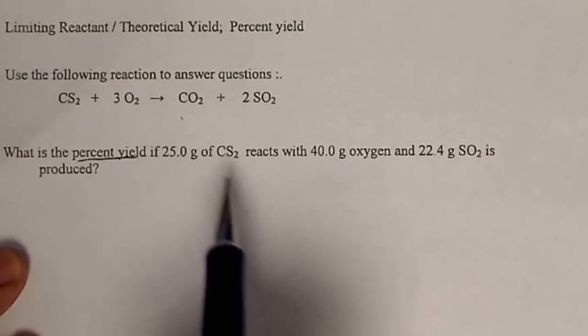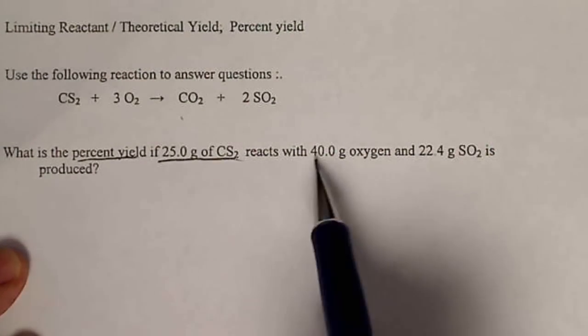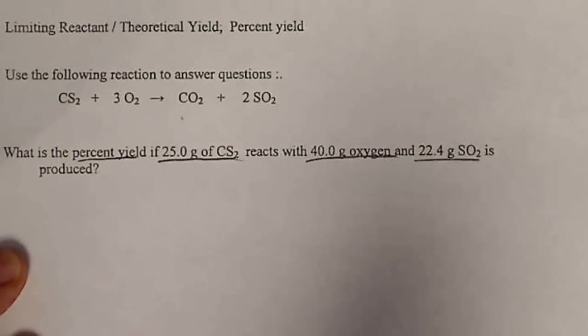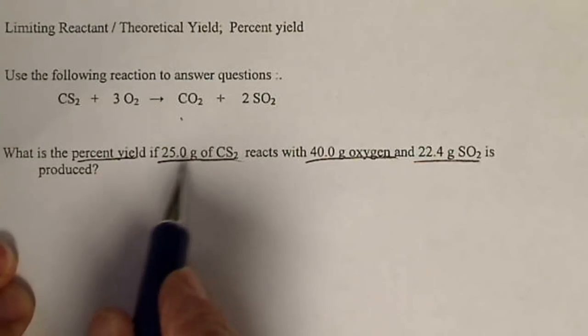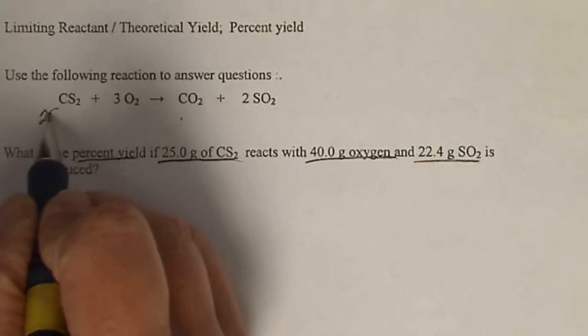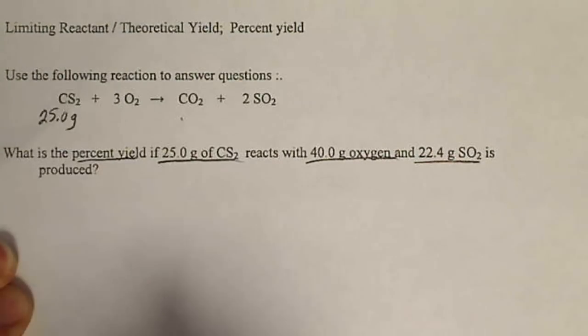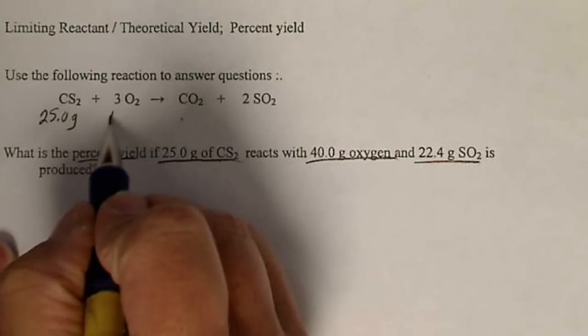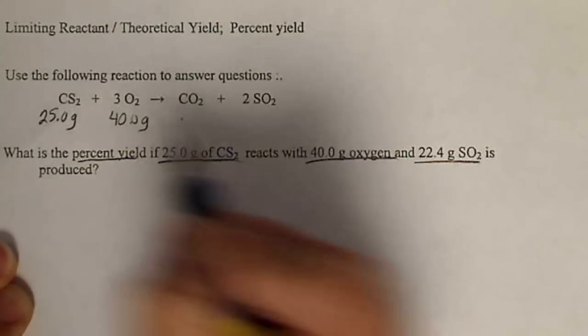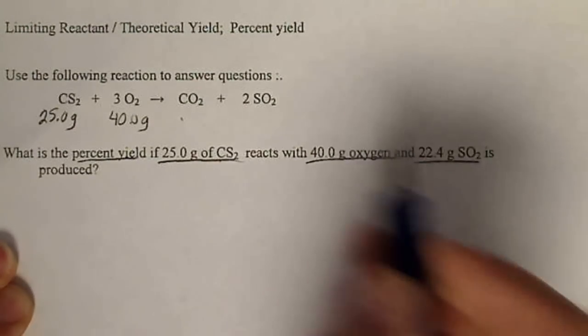If we look at this problem, we're asked the percent yield, and we're given three values here. In order to keep things straight, we'll write each mass underneath each formula, so we have 25 grams of carbon disulfide, 40 grams of oxygen, and we have 22.4 grams of SO2.